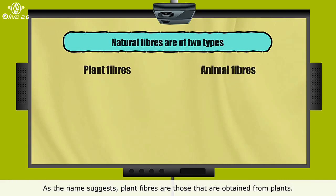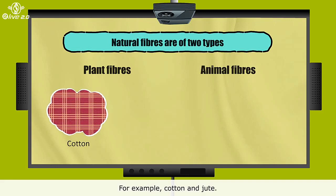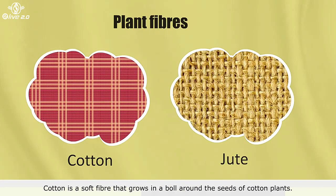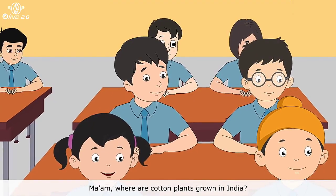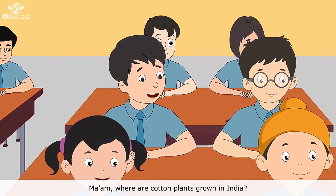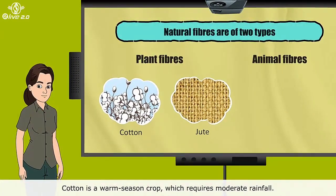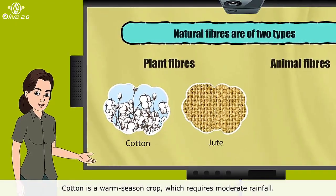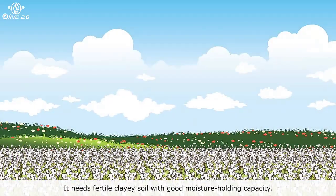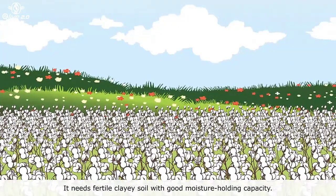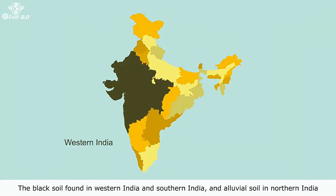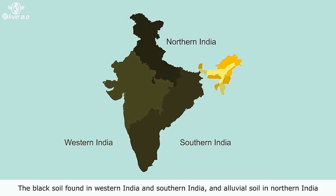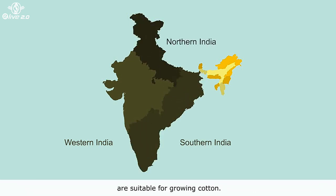As the name suggests, plant fibres are those that are obtained from plants. For example, cotton and jute. Cotton is a soft fibre that grows in a ball around the seeds of cotton plants. Cotton is a warm season crop which requires moderate rainfall. It needs fertile, clayey soil with good moisture holding capacity. The black soil found in Western India and Southern India, and alluvial soil in Northern India, are suitable for growing cotton.